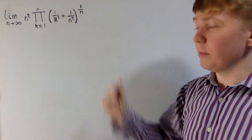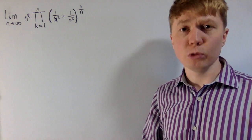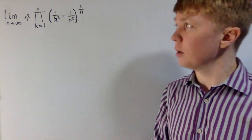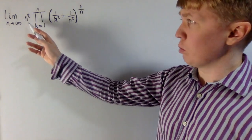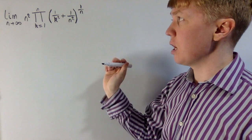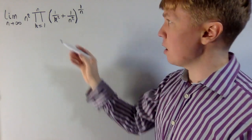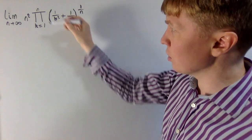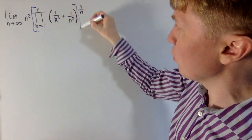We're going to have a look at evaluating this limit, and there's a really nice argument we're going to use later on. The first few things we're going to do are just some tidying up with algebra. The very first thing I'd like to do is try and take this n squared inside our product here. Instead of having each individual term to the power of 1 over n in the product, we take the whole product to the power of 1 over n.